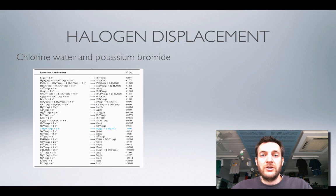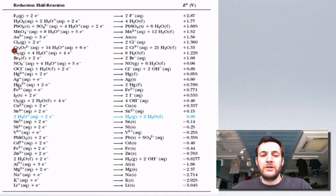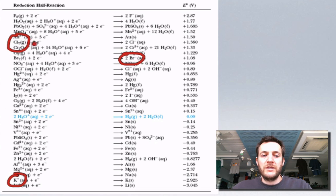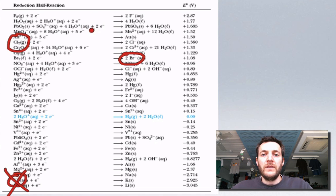Let's start with a halogen displacement reaction: we mix chlorine water and potassium bromide. If we go to the list of reduction potentials on our datasheet we can find chlorine — chlorine water is just chlorine dissolved in water — and we can find potassium ions and bromide ions. Now, chlorine wants to gain electrons to turn into chloride ions, and potassium also wants to gain electrons, so there's no way those two things can react together. The potassium is just the spectator ion in this reaction.